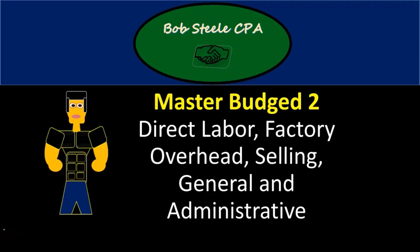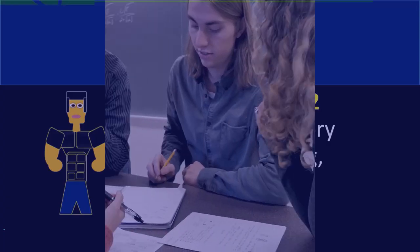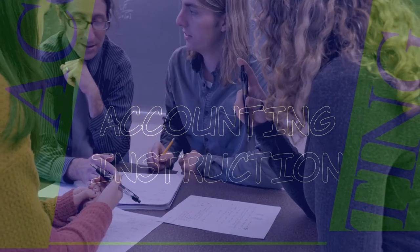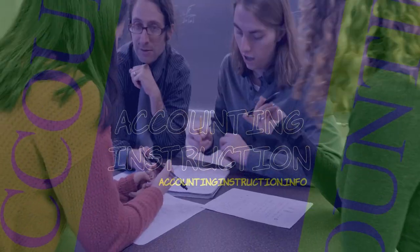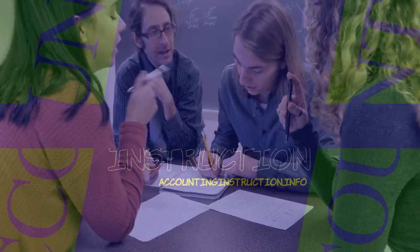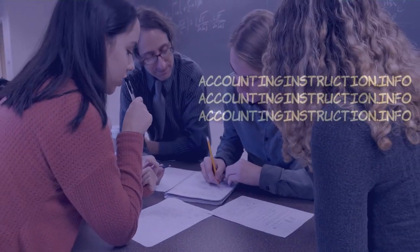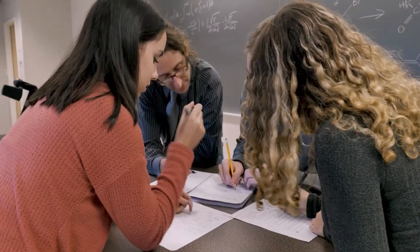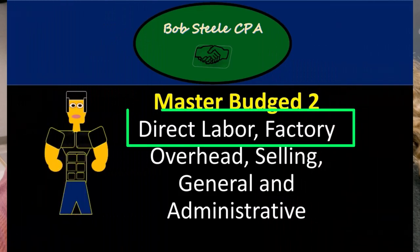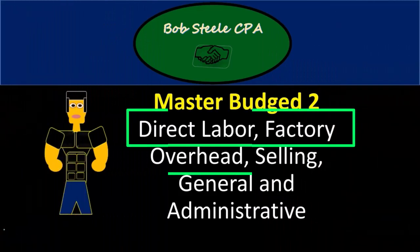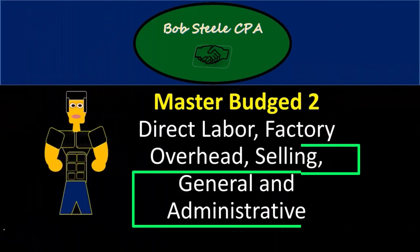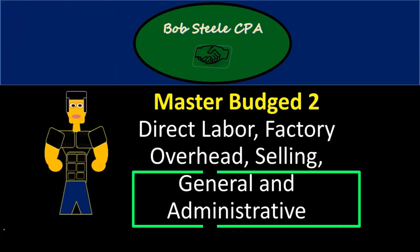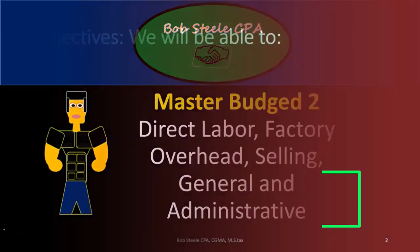Hello, in this lecture we're going to continue on with the master budget. We started the master budget last time, so if you haven't seen the first part of this, you may want to look at that first and then move on to the second piece of it. The second piece here is including direct labor, factory overhead, selling, general and administrative parts of the master budget.